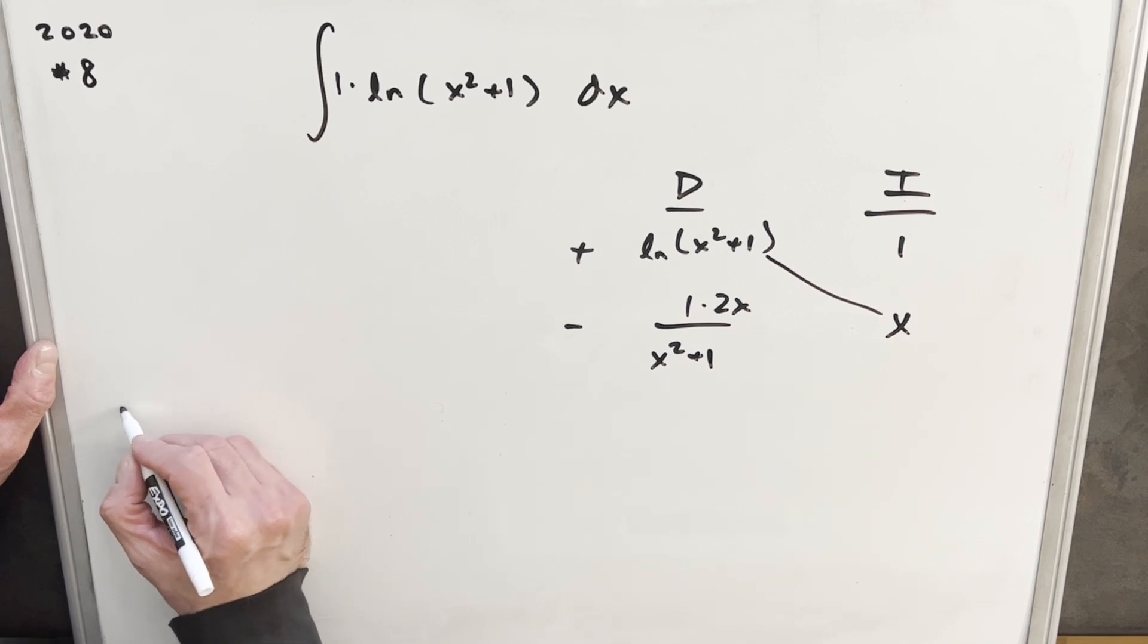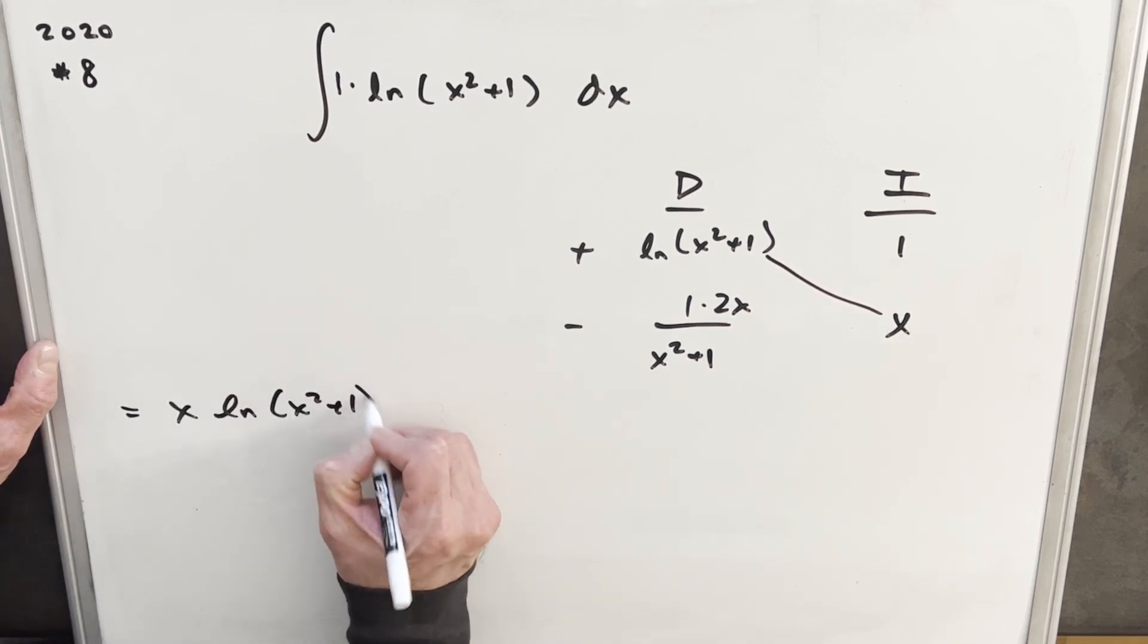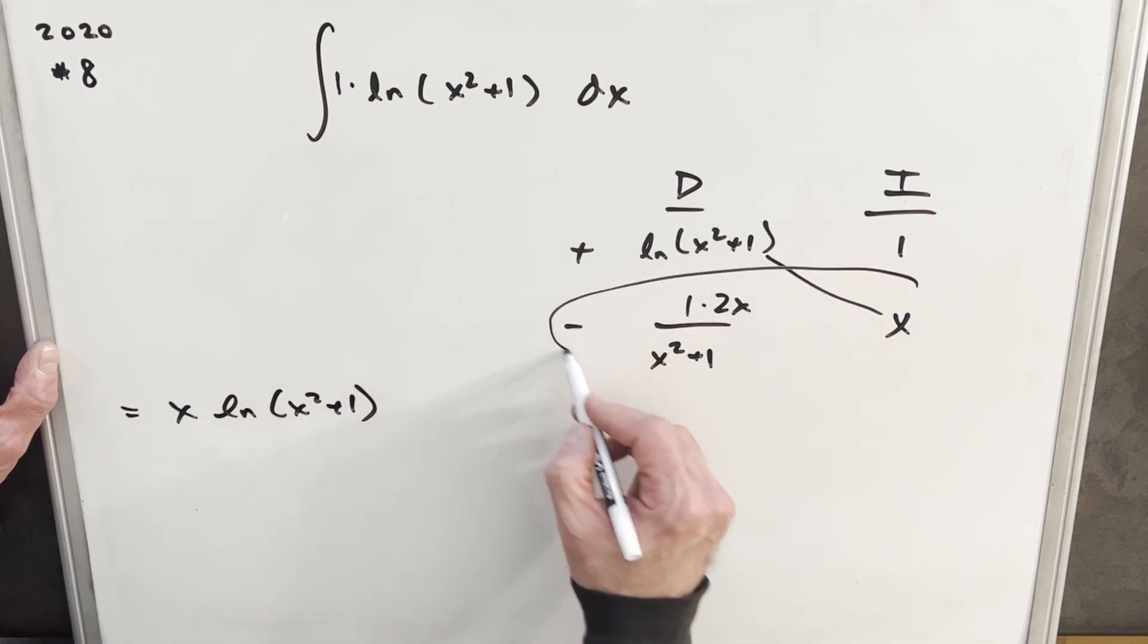Okay, and then the diagonal here will be part of our solution. So let's just write that out. We're going to have x natural log x squared plus one. And then this piece is going to be an integral.